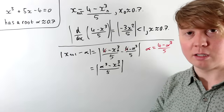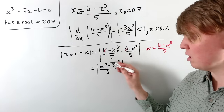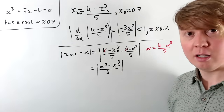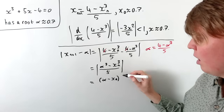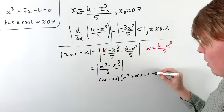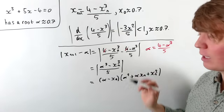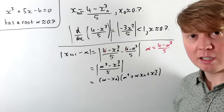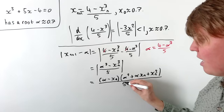We can replace alpha using 4 minus alpha cubed all over 5, giving us nice cancellations — the 4 and minus 4 cancel — leaving us with alpha cubed minus x_n cubed in the numerator, all over 5. This is interesting because we can factorise alpha cubed minus x_n cubed: it equals zero when alpha equals x_n, so we can take out (alpha minus x_n) as a factor. This gives us (alpha minus x_n) times (alpha squared plus alpha·x_n plus x_n squared). You can verify this by expanding the brackets or by polynomial division.